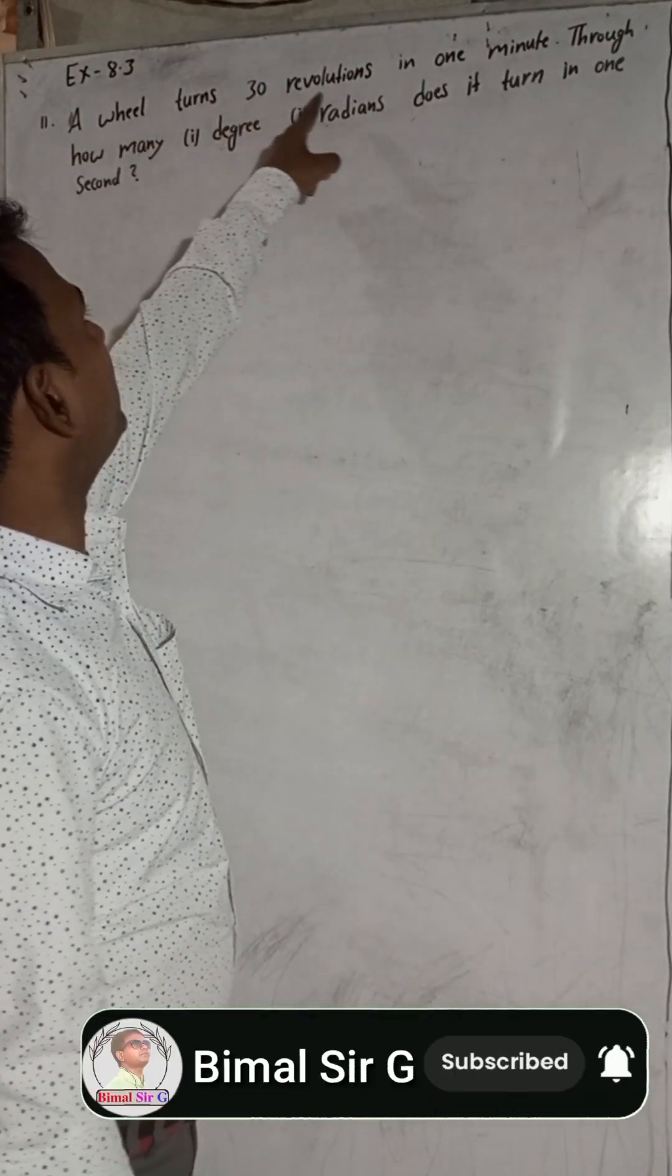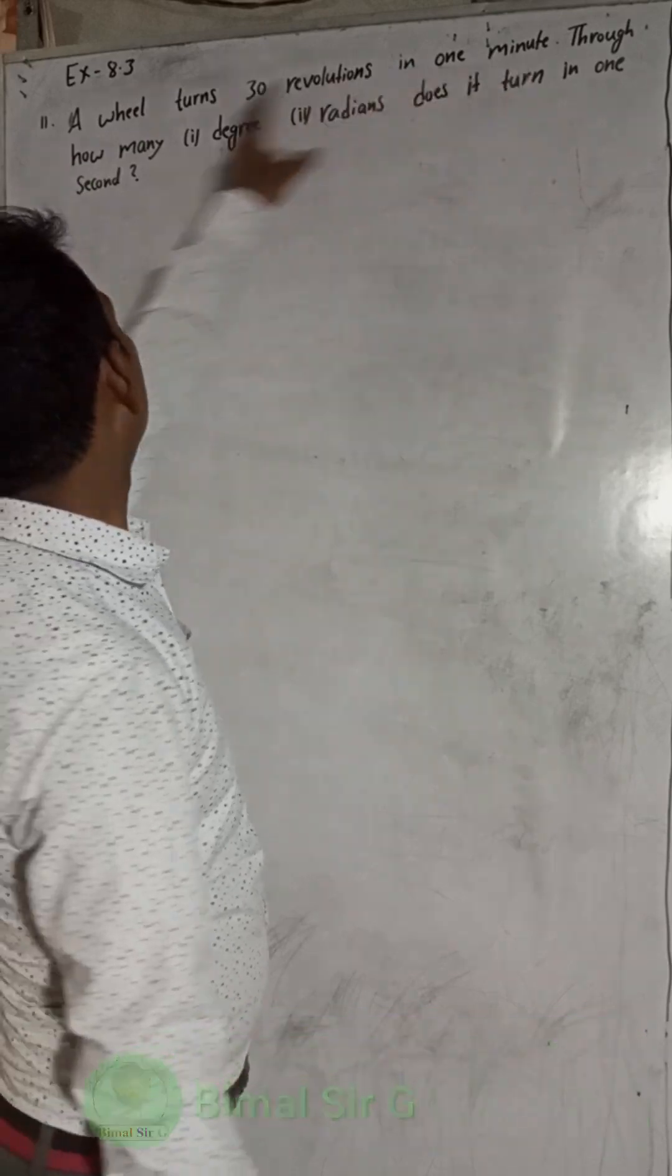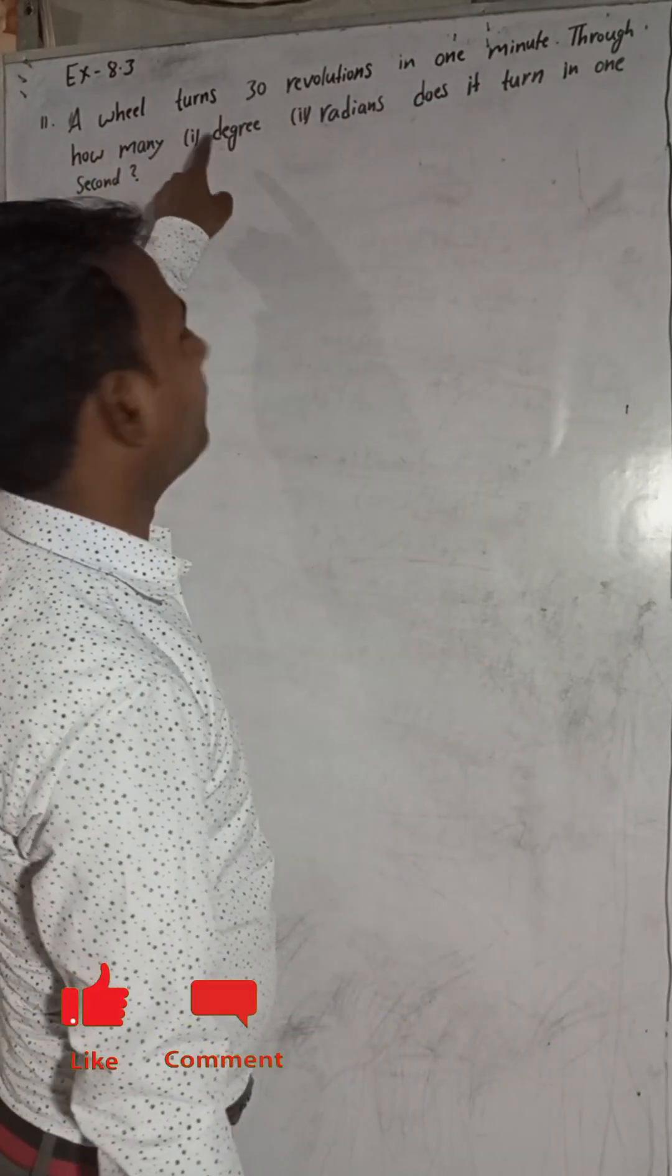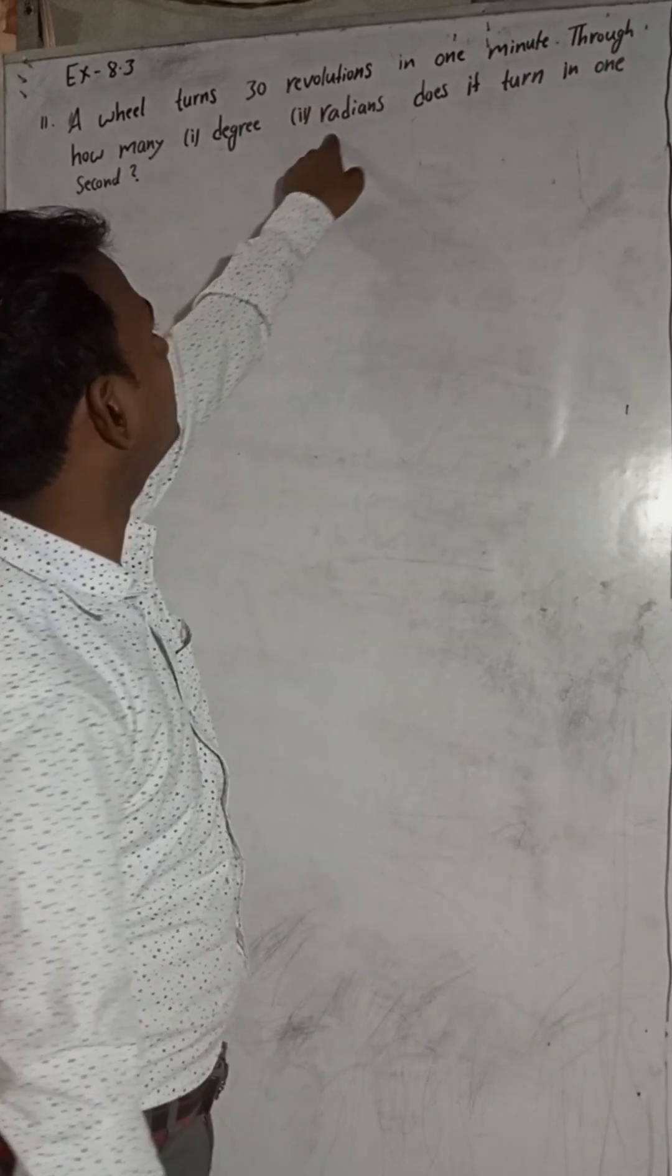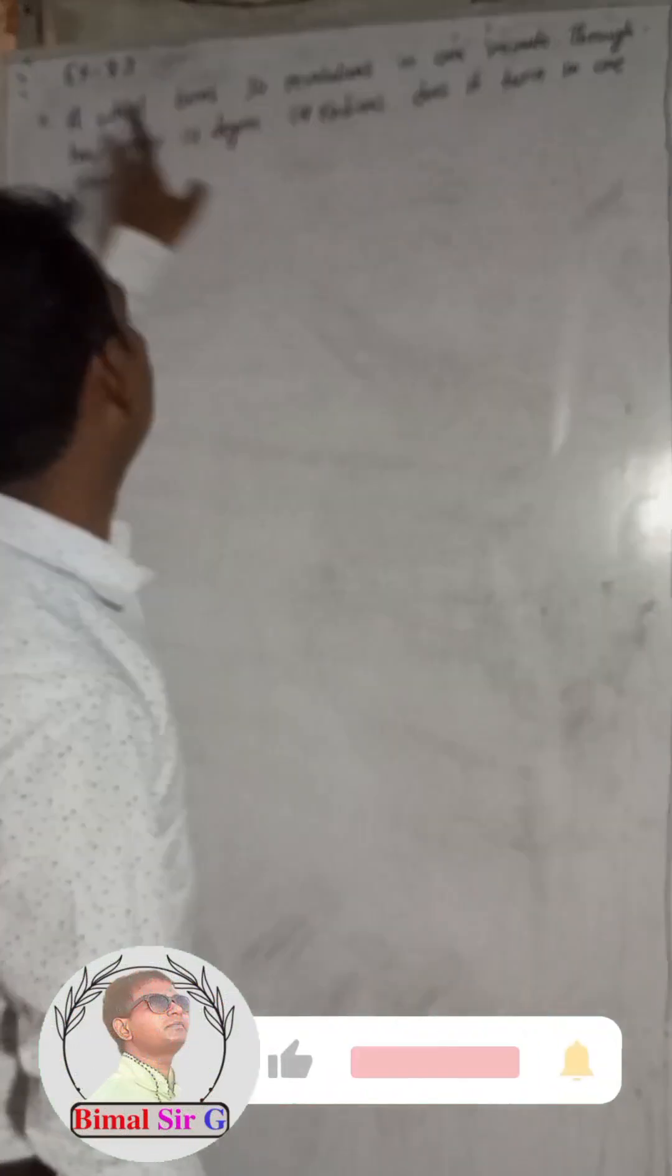A wheel turns 30 revolutions in 1 minute. Through how many, number 1, degrees, and number 2, radians, does it turn in 1 second? This is our question.